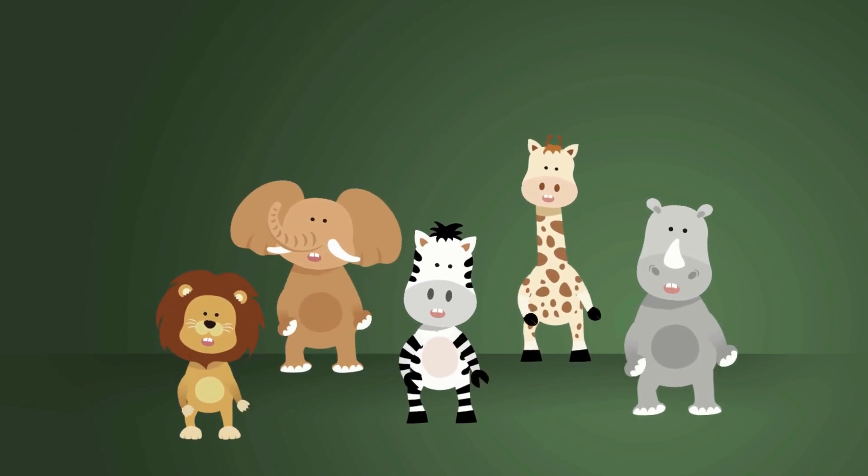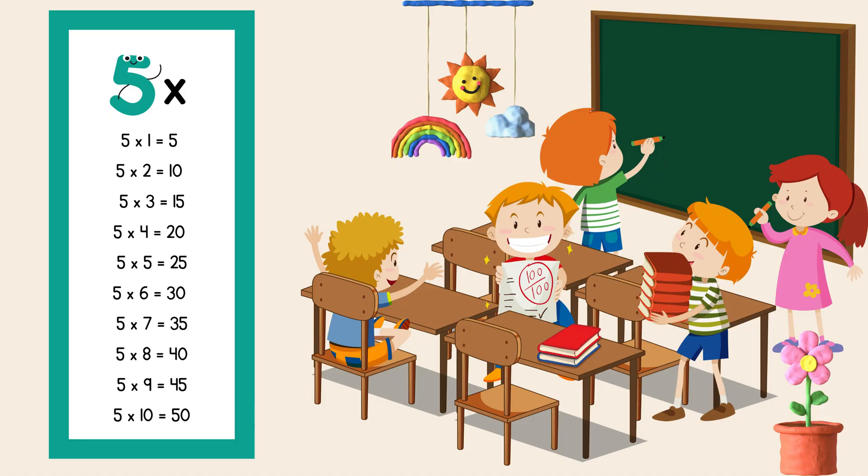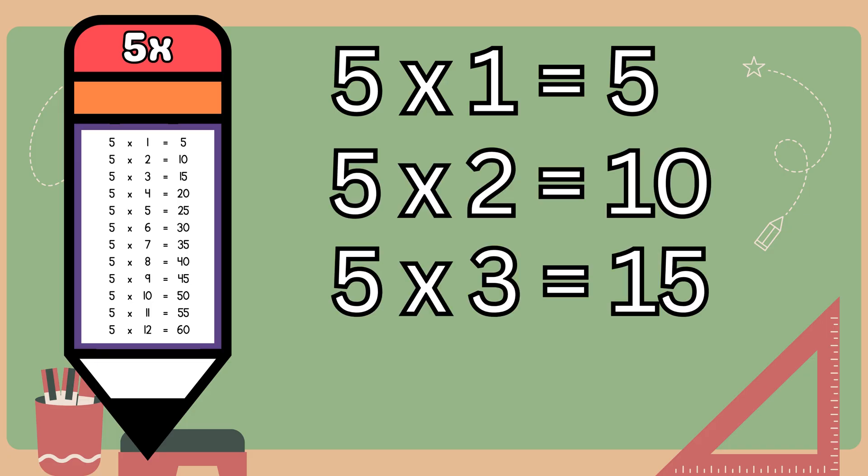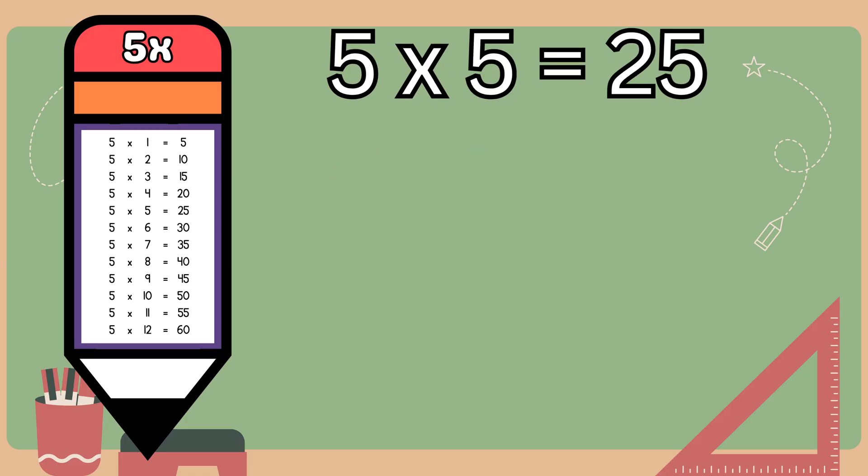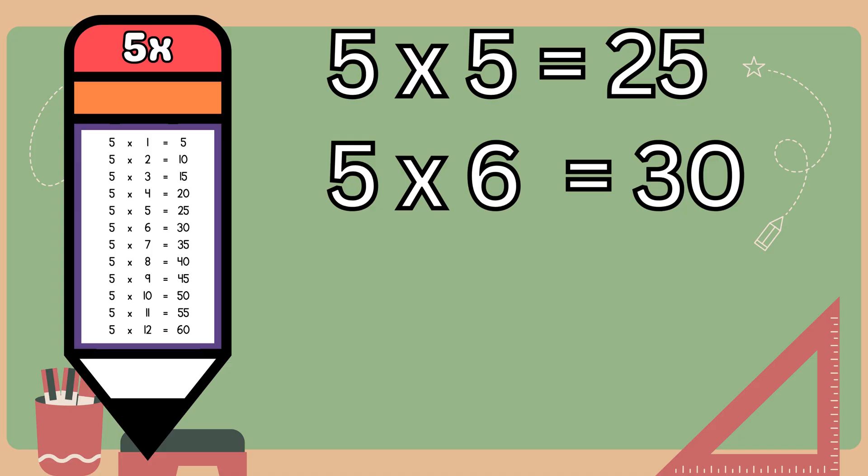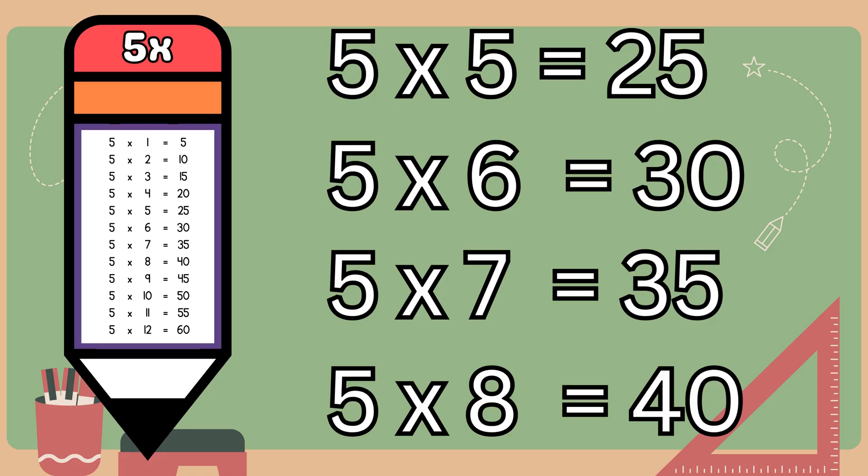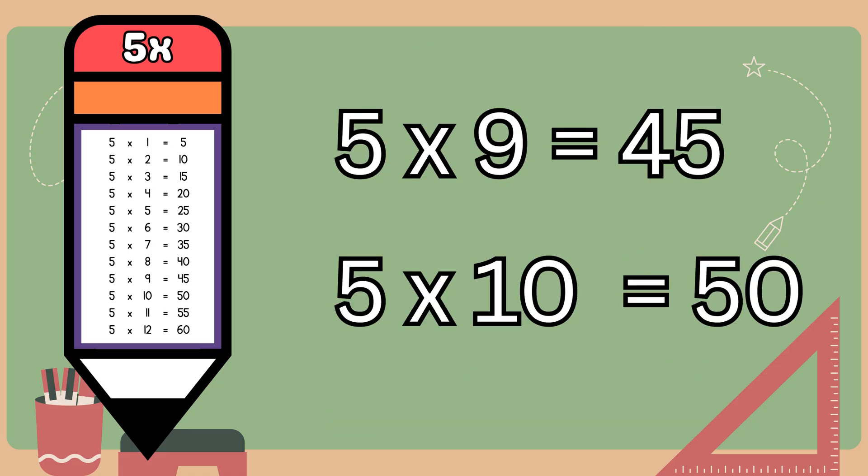The table of five! Five ones are five, five twos are ten, five threes are fifteen, five fours are twenty, five fives are twenty-five, five sixes are thirty, five sevens are thirty-five, five eights are forty, five nines are forty-five, five tens are fifty.